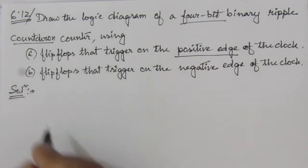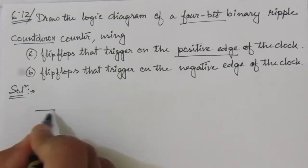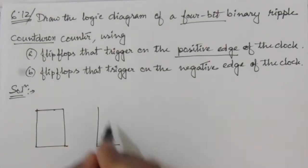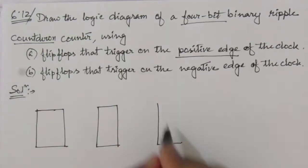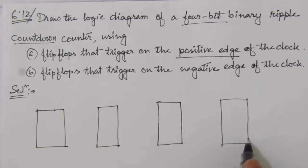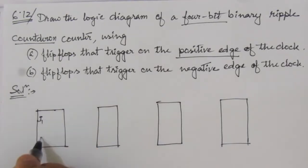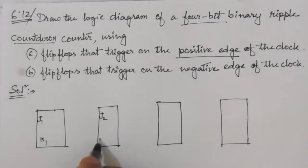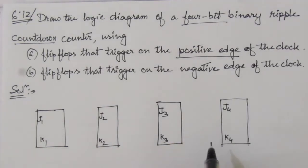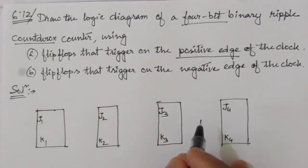Let us make a 4-bit binary ripple countdown counter. Let us draw the flip-flops first. We have four JK flip-flops, labeled J1/K1 (first), J2/K2 (second), J3/K3 (third), and J4/K4 (fourth). For better understanding of this circuit, you can go through the previous problem 6.11 which I have solved earlier — available in the playlist at the end of this video.